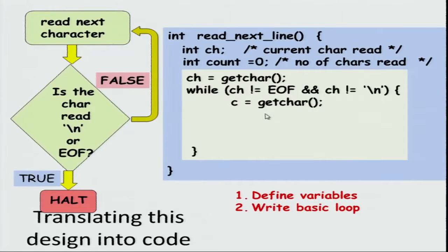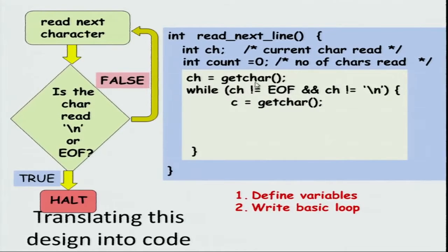A small technical point here: `getchar` returns an integer. This is because end of file is defined as -1, whereas ASCII characters go from 0 to 127 or so. Because of this -1, you cannot store the return value of `getchar` as a character — it technically has to be an integer. So keep that in mind.